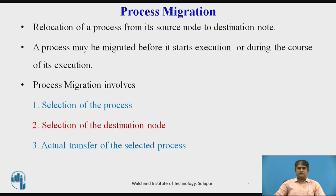Process Migration is the relocation of a process from its current location to another node. The flow of execution of a migration process is shown here. A process may be migrated either before it starts executing on its source node — known as non-preemptive process migration — or during the course of its execution, known as active process migration. Preemptive process migration is costlier than non-preemptive process migration, since the process environment must also accompany the process to its new node.